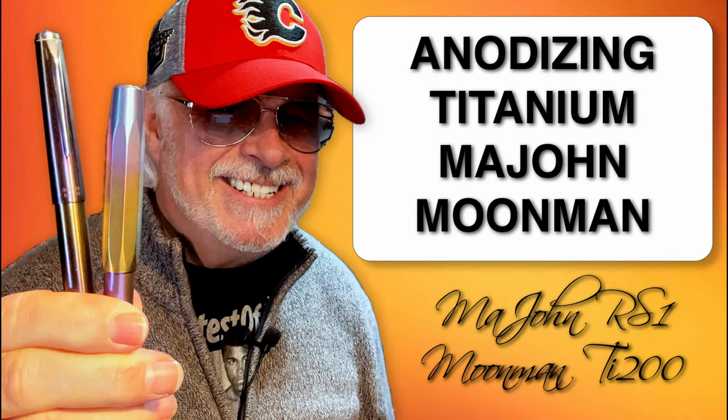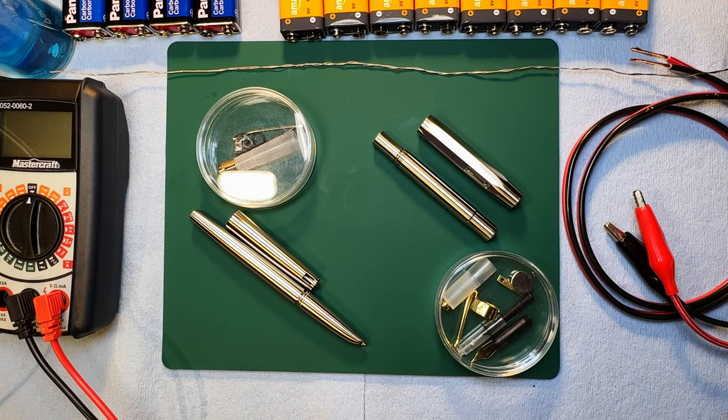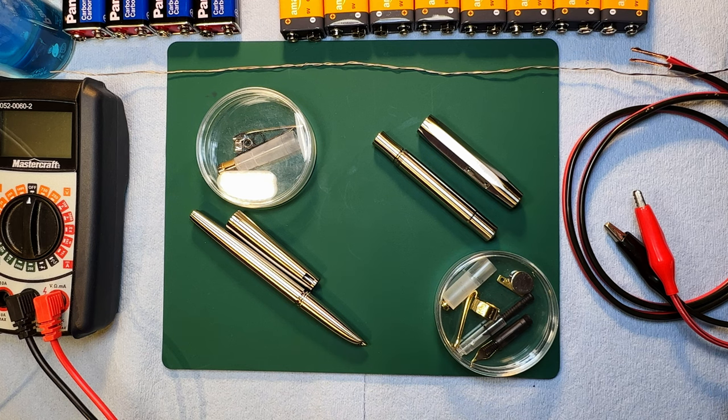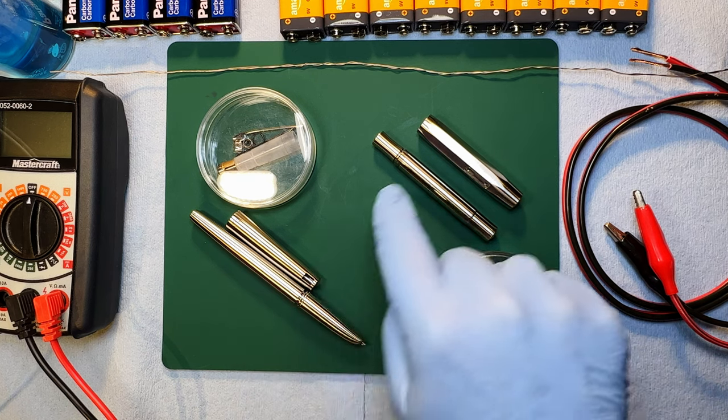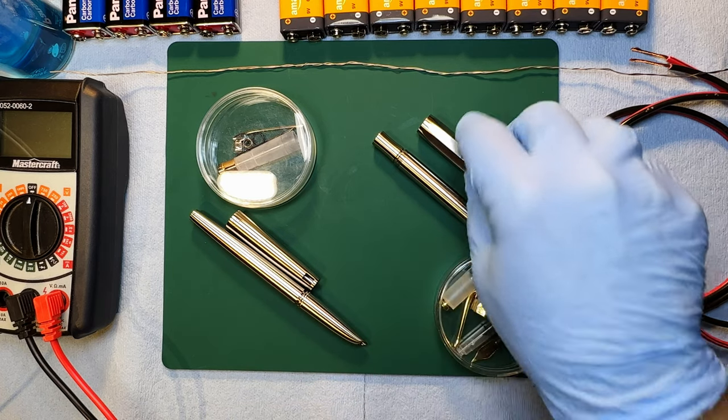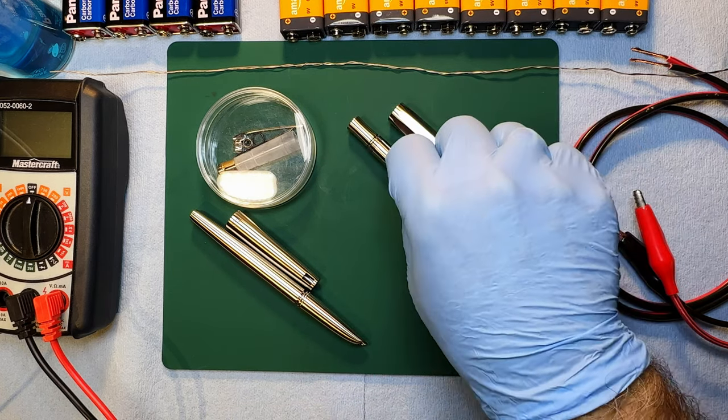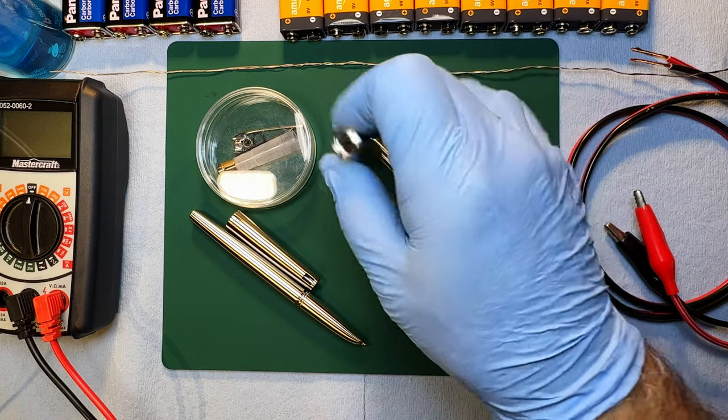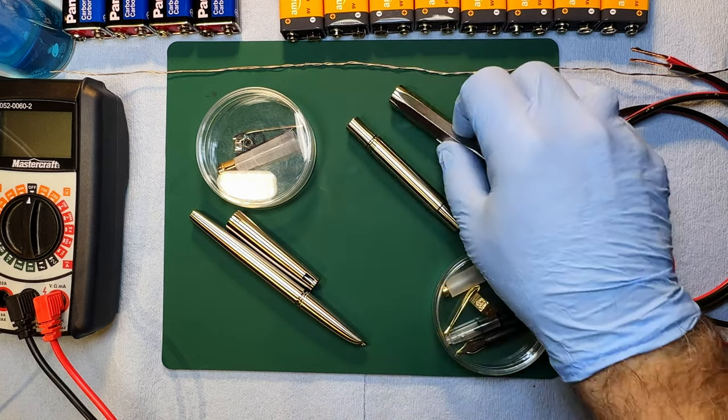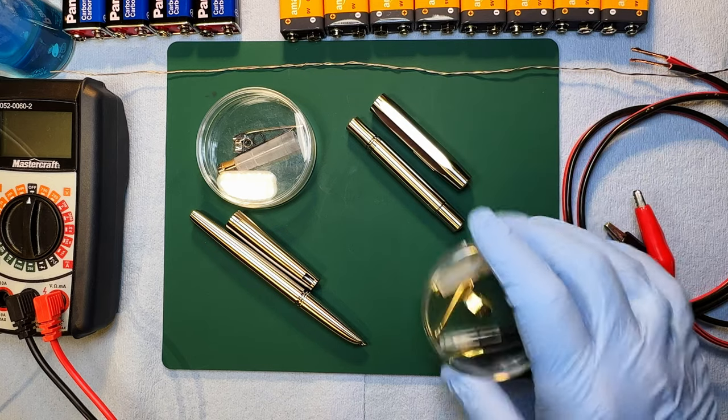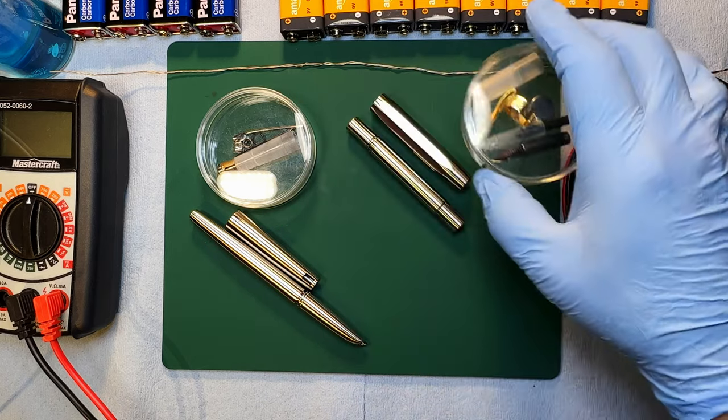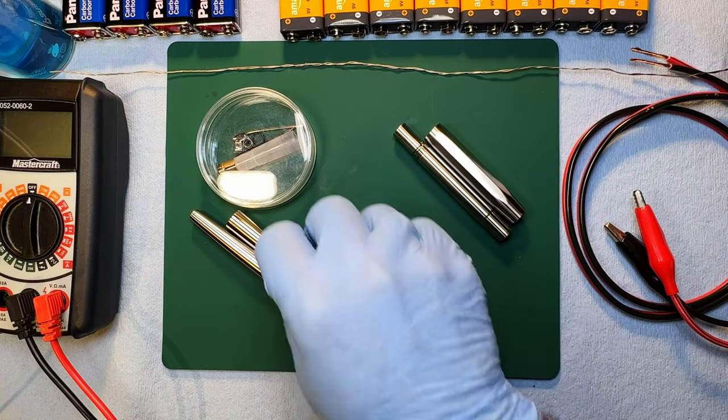Okay, so here's what I did to set up for this experiment. I've taken my two titanium pens apart so I just have the titanium pieces alone. Here is the Madjohn RS1 in pieces. I removed the top finial and the cap liner as well as the nib and the converter, and I've got all the parts in this little case right here to keep them safe.